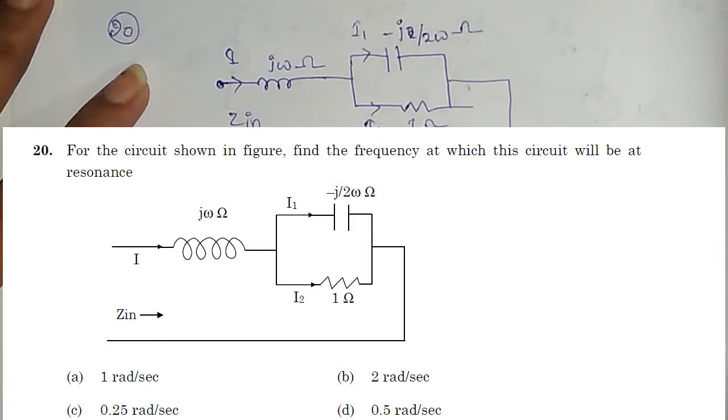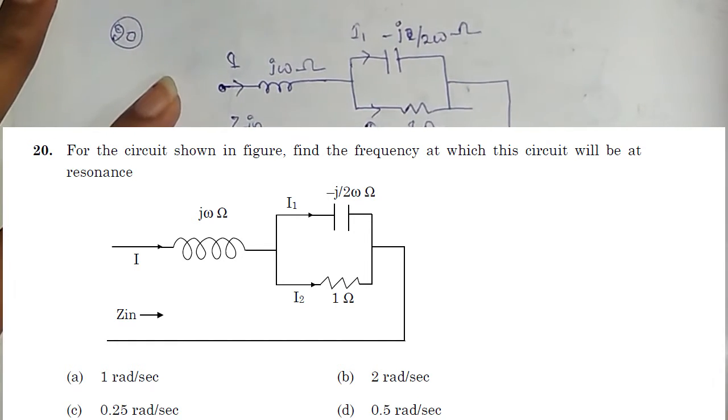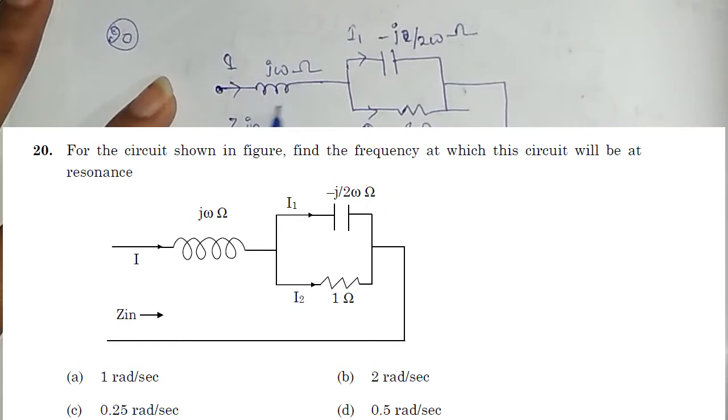So under resonance condition, inductor gets short circuited, capacitor gets open circuited, and we get the maximum impedance of the circuit for a series resonance.